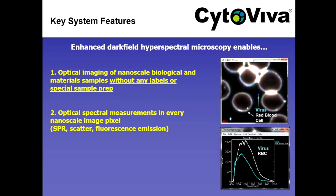You can measure optical spectral measurements in every nanoscale pixel. The optical spectrum could be surface plasmon resonance if you're looking at plasmonic nanoparticles such as gold or silver nanoparticles, or it can be scatter. In the case of virus particles we're looking at scatter. It's important to note that scatter from a sample does not represent the true size of the material — it's the scatter size, which is generally larger than the material itself. Different materials produce different scatter sizes based on their scatter intensity.